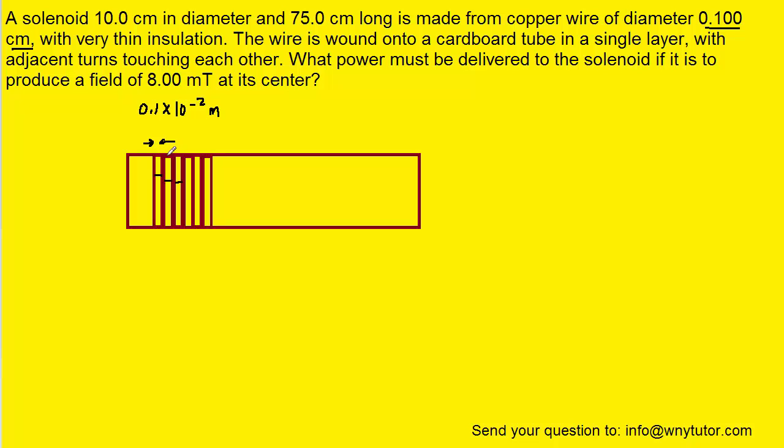The next turn of the wire would also be .1 times 10 to the minus 2 meters, and so would the next turn and the next turn. Now let's just assume for a moment that the length of this cardboard tube is exactly one meter. If we took that one meter and we divided it by the length of each one of these little strips of wire, which we determined to be .1 times 10 to the minus 2 meters.